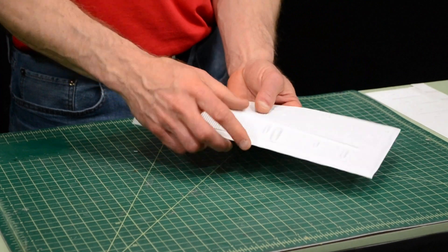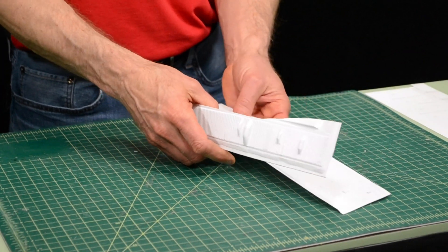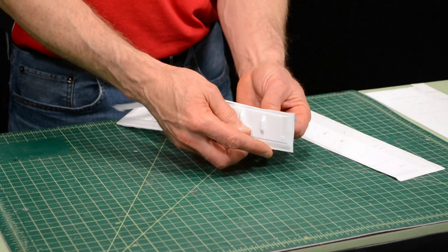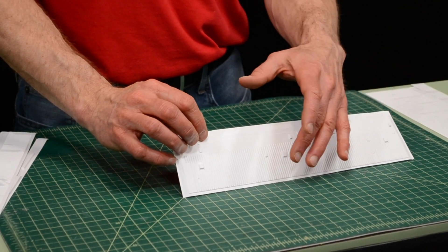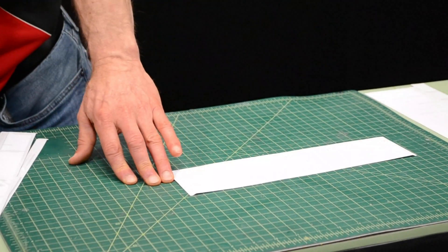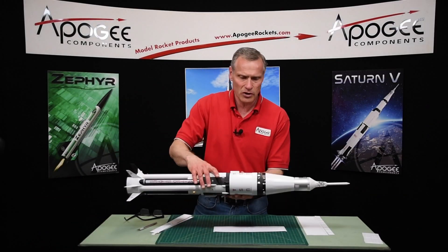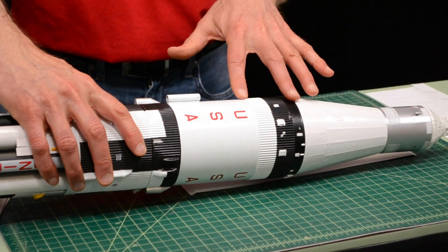Okay, once they're scored just go ahead and bend them back and forth to separate the three parts. We'll do the bigger part first. This goes on the front of the second stage, which is right here. So that's going to go right here on the rocket.